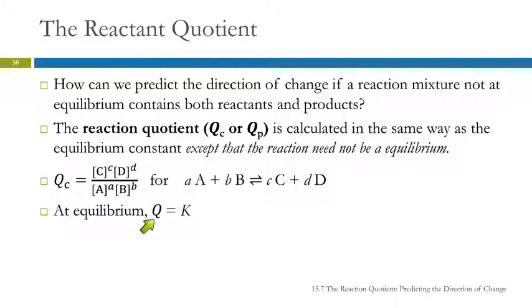When you get to equilibrium, Q will equal K. So we're just calculating an equilibrium constant that isn't really a constant at a different set of circumstances.